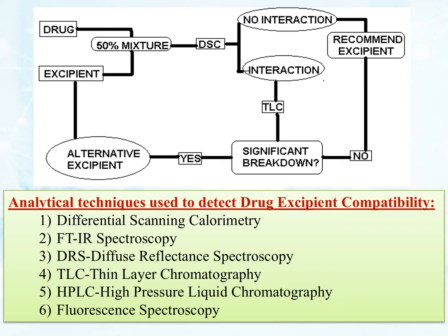Here you can see the flow chart for stability study of drug or excipient. Take a 50% mixture of drug and excipient, observe interaction or non-interaction, then perform TLC. If the recommended excipient shows no significant breakdown, proceed; otherwise take an alternate excipient and continue the flowchart. Analytical techniques for drug-excipient compatibility include differential scanning calorimetry, FTIR, TLC, HPLC, and fluorescence spectroscopy.